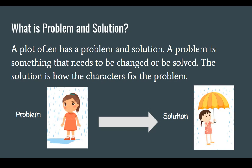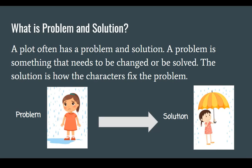Here's an example of a girl standing in the rain and she looks a little upset. The solution to this problem would be an umbrella, or it could be something like a raincoat or going inside. There are lots of ways that we can come up with a solution, or a way that characters come up with a solution in a text.